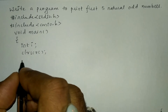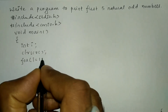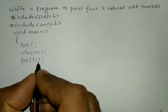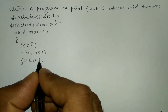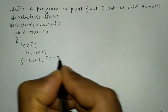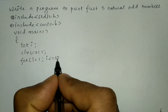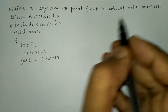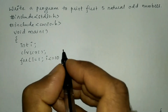Now we'll write the for loop. For i is equal to 1, because 1 is the first odd number — that's the reason I have taken i equal to 1. Next, I'll write i is less than or equal to 10, because in between 1 to 10 we'll be getting the first five natural odd numbers.